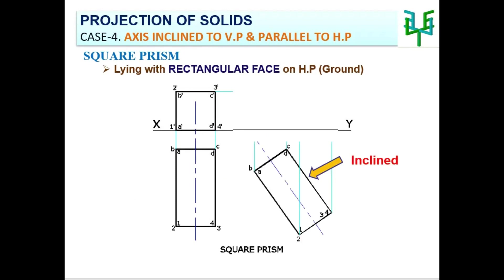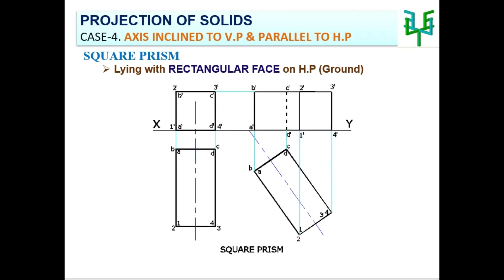Thereby, redraw the second stage plan for the given inclination. For the elevation of the second stage, draw projection lines from the second stage plan and from the first stage elevation. Identify the corresponding intersection points and darken the visible lines. Inner edges or invisible lines should be drawn as dashed lines.